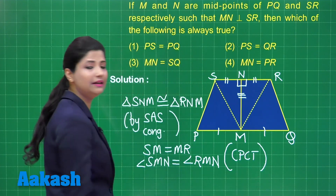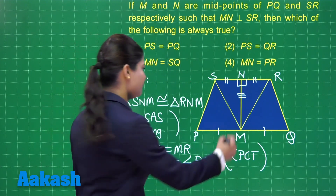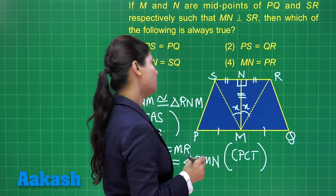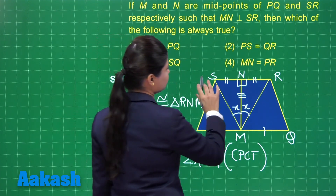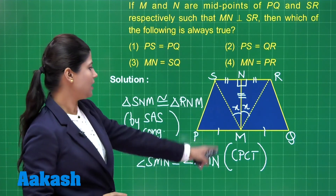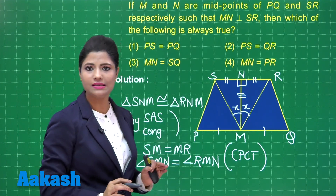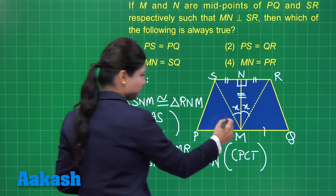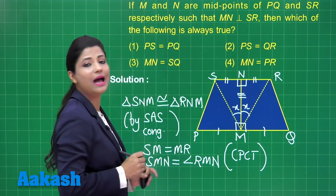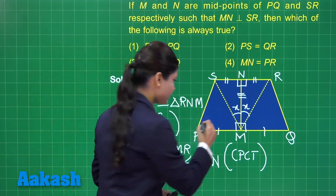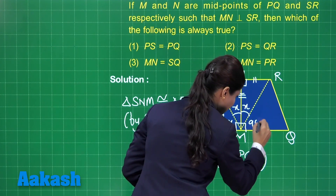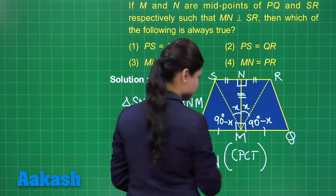If these two triangles are congruent, their corresponding parts are equal. This gives us SM equal to MR, and angle SMN equal to angle RMN by CPCT. If I consider this angle to be X, this is also X. Since SR is parallel to PQ, MN perpendicular to SR also makes MN perpendicular to PQ at point M. The remaining angles are 90 degrees minus X.